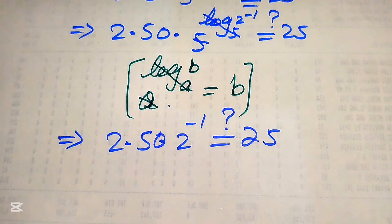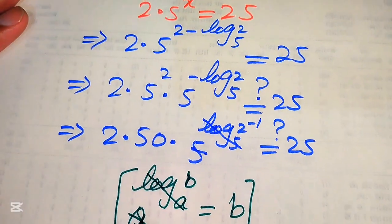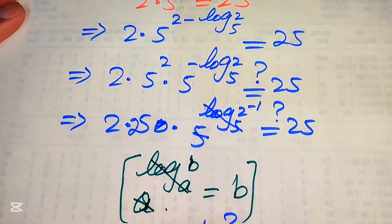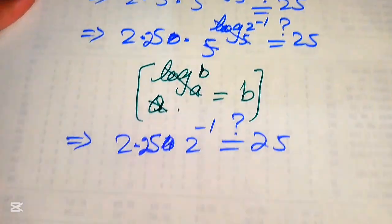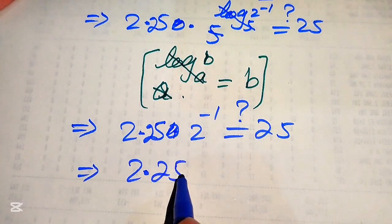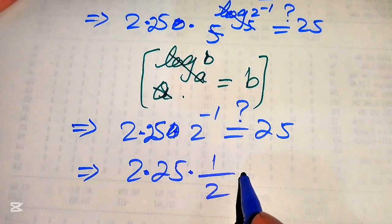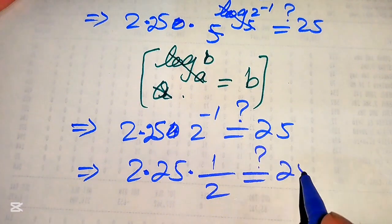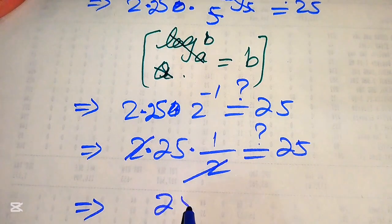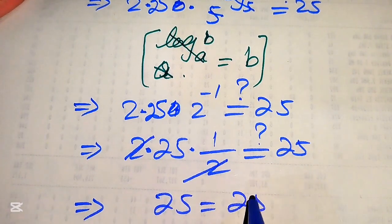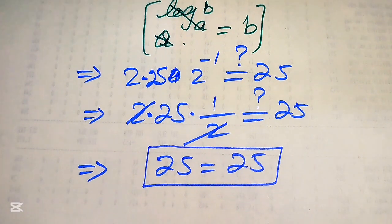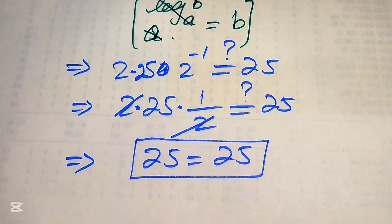There is a little correction here: 5 squared equals 25, not 50. So we have 2 multiplied by 25 multiplied by 1 over 2. This 2 is cancelled out by this 2, and finally we get 25 is equals to 25. This shows that the value of x satisfies our given question statement, and this is the final answer.